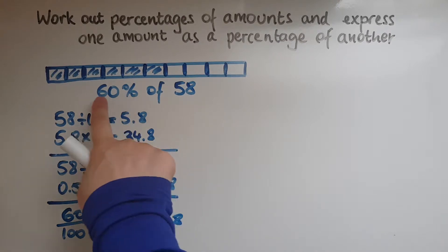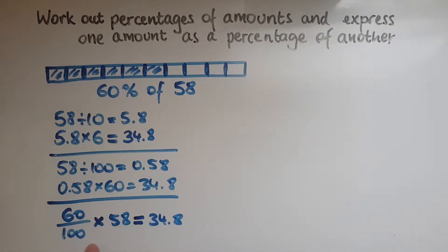Again, 60% is 60 out of 100, which is 60 divided by 100, of 58, multiplied by 58.